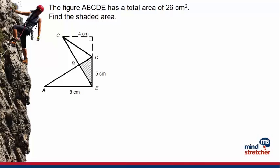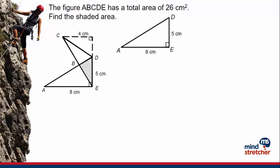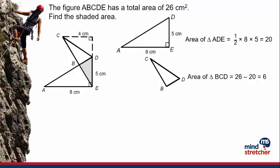Let us read this question. The figure ABCDE has a total area of 26 square centimeters. Find the shaded area. We can see that this figure is made up of two overlapping triangles. Let us find the area of triangle ADE. Using the area of triangle formula, we use half times 8 times 5, which gives us 20. Since the area of the whole figure is 26 square centimeters, we find the area of triangle BCD by subtracting 20 from 26, which gives an answer of 6.